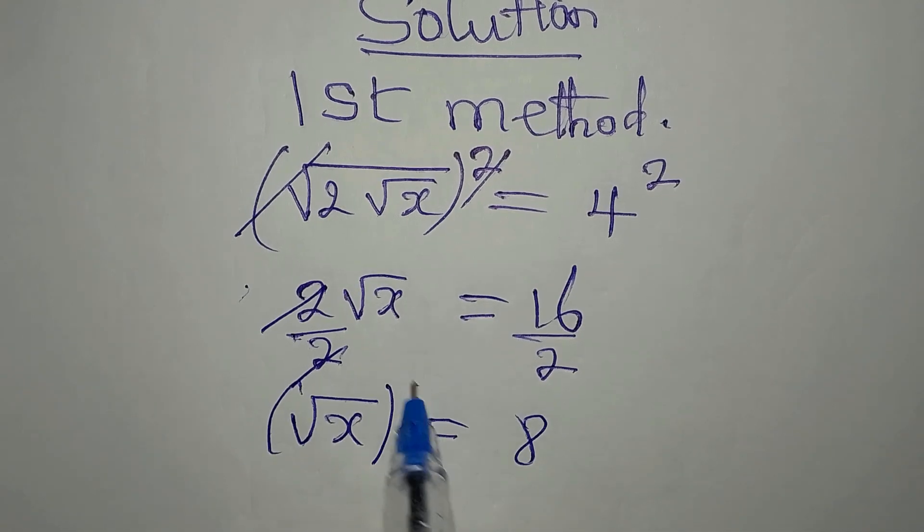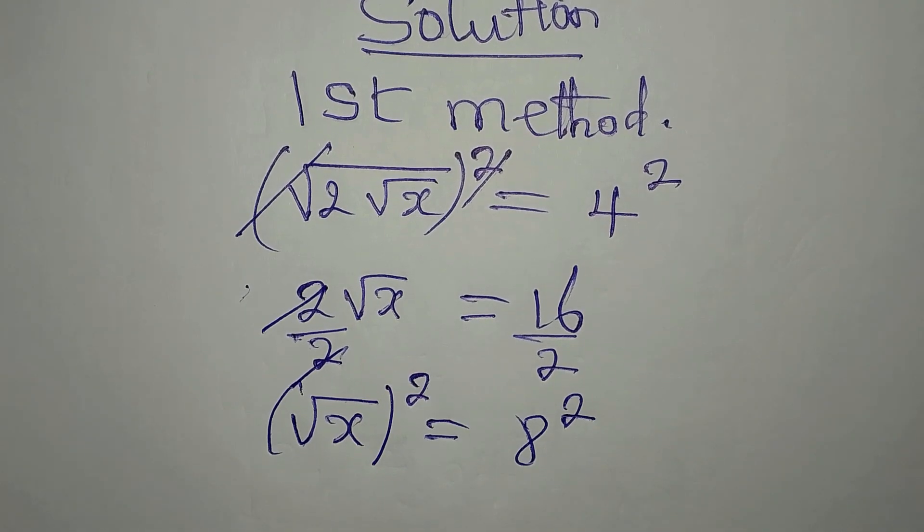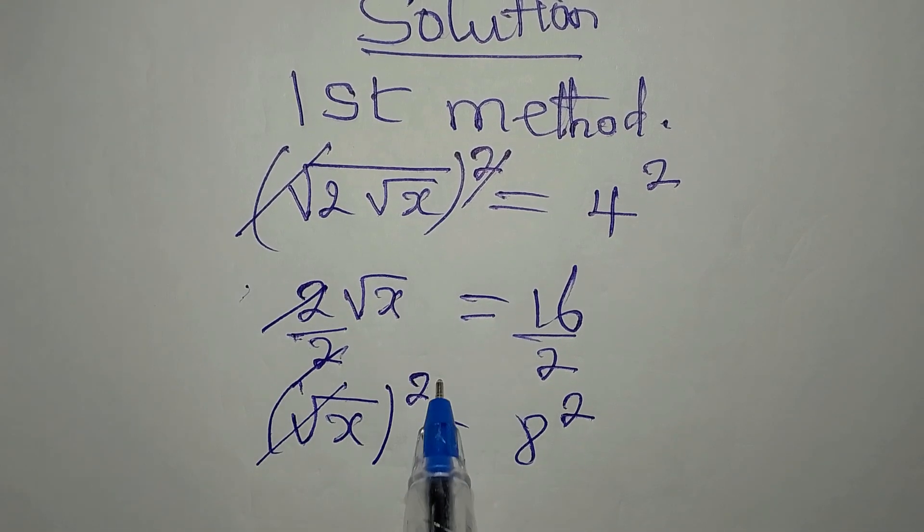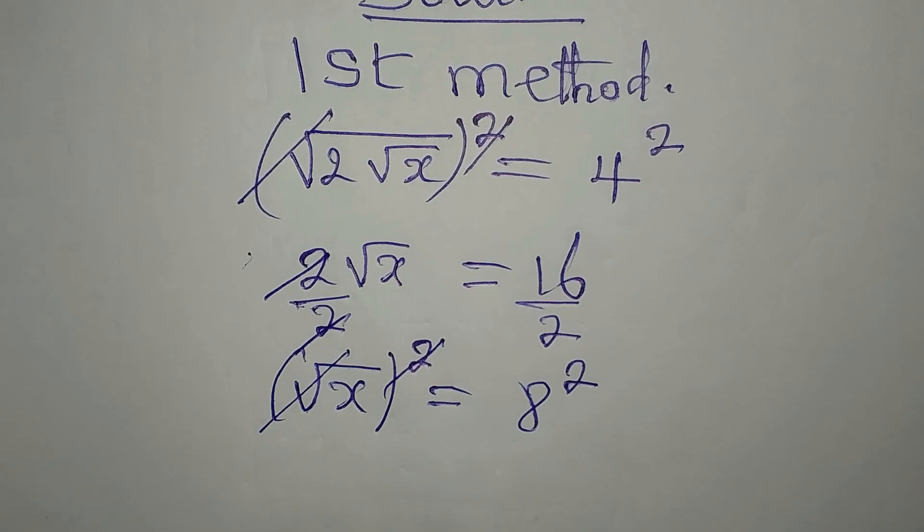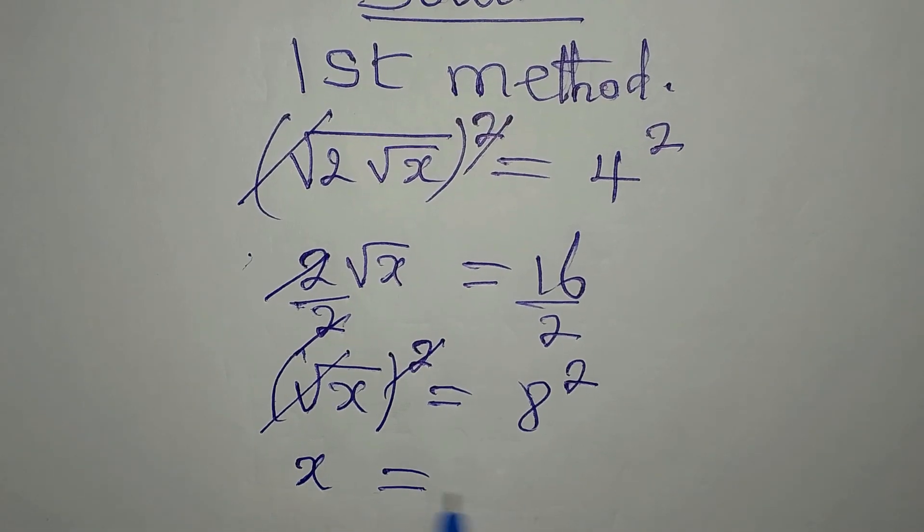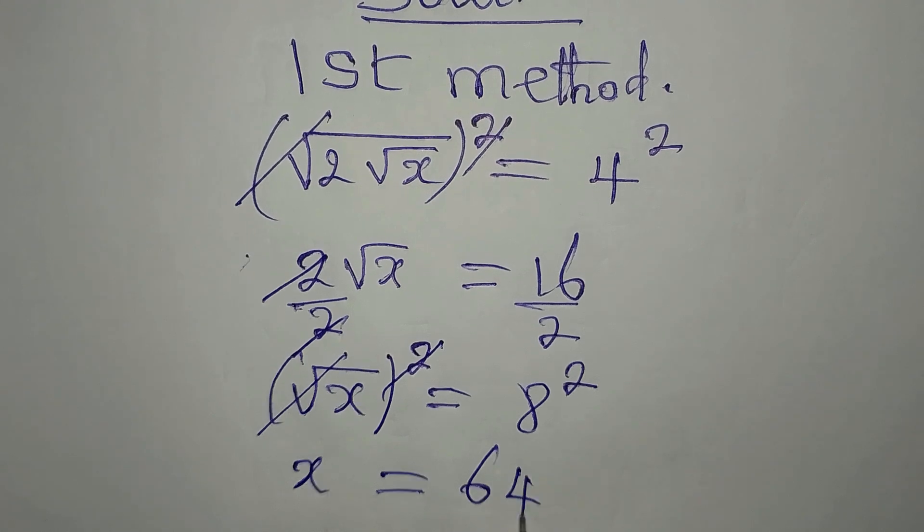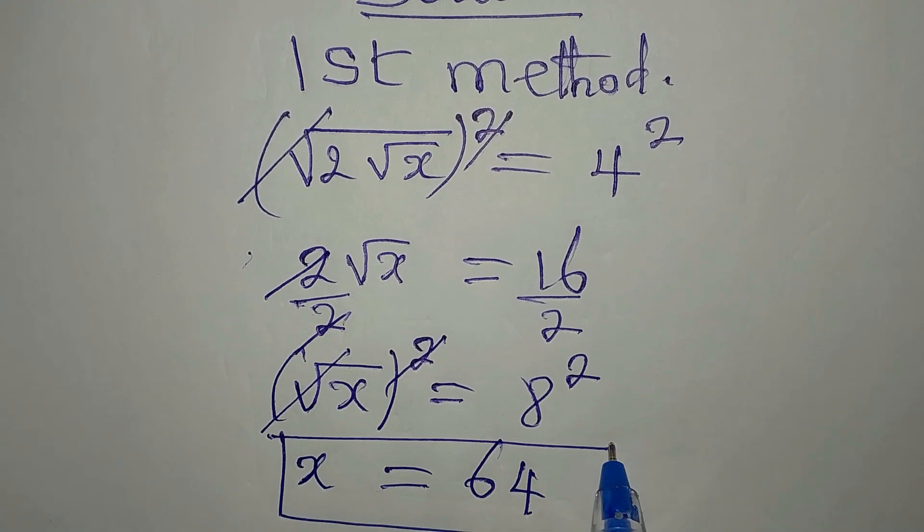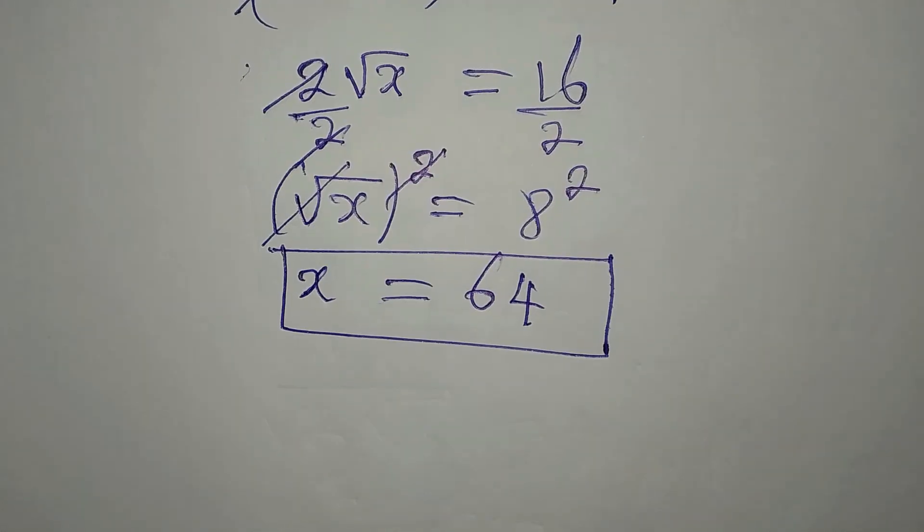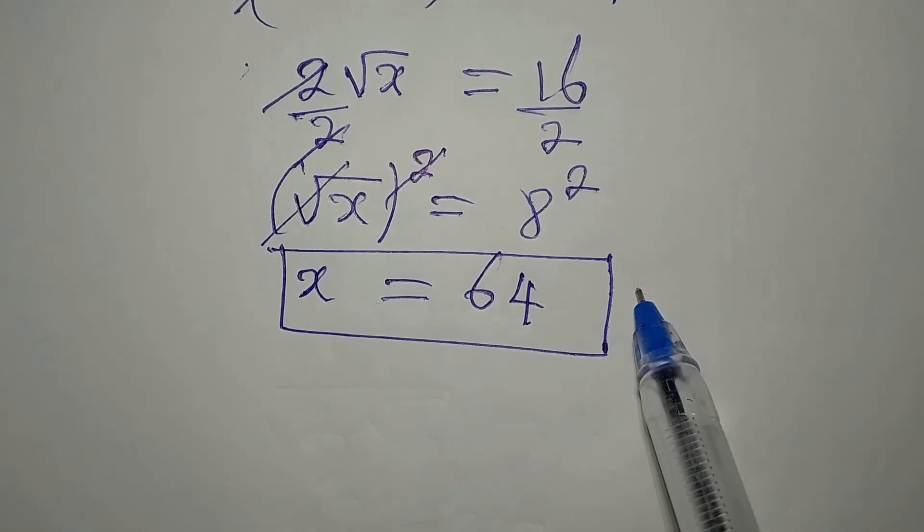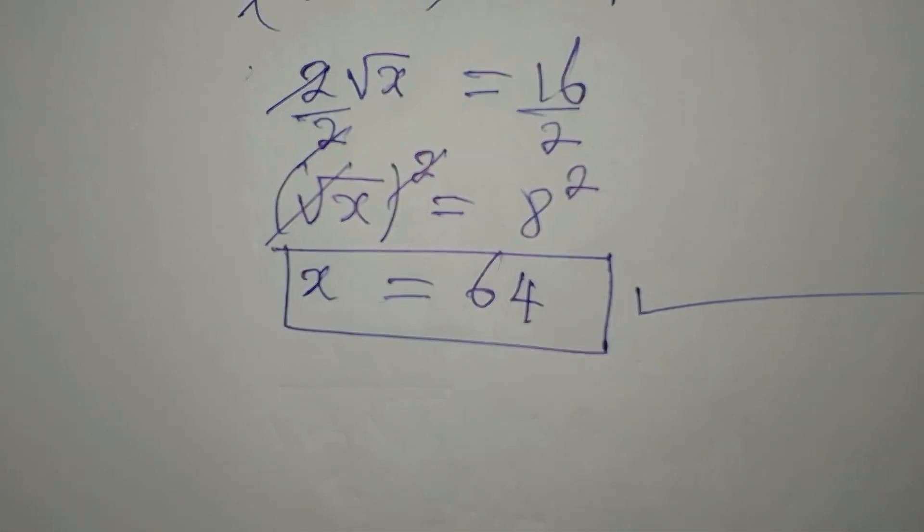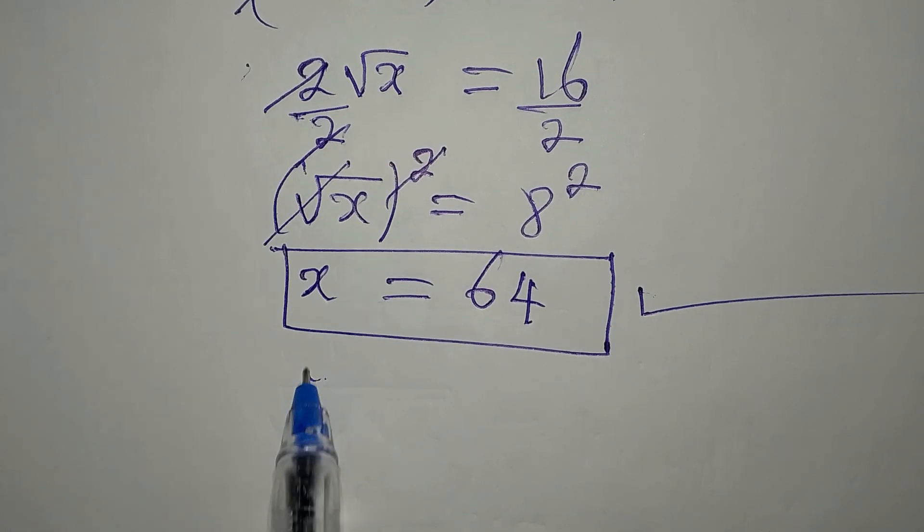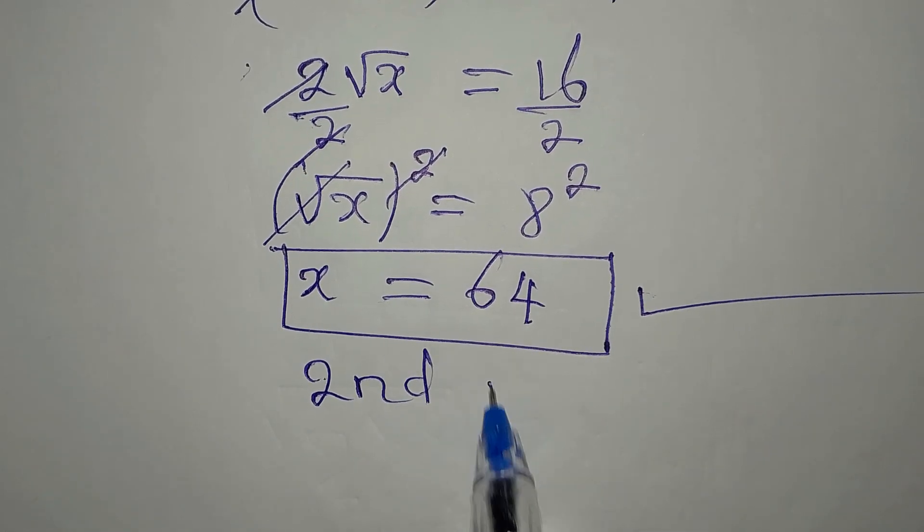Now, I still have to square this and square this. See that this square root will go again and then x will now be equal to 64 because 8 squared is 64. Now, let's look at the second method because the first method gives us x to be 64. So we look at the second method.